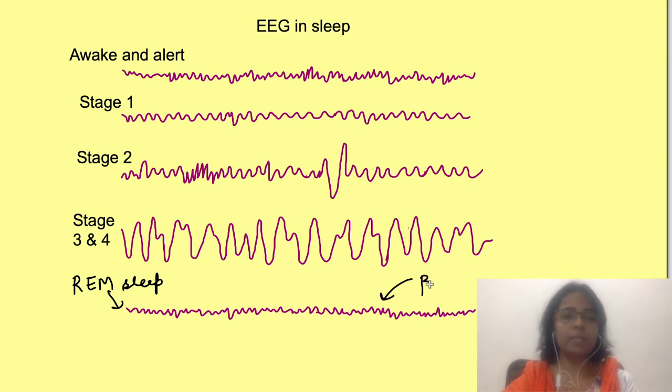In REM sleep we see beta wave-like activity just like the one seen in awake and alert state. It appears paradoxical that even though we are sleeping, EEG brain activity resembles an awake state. So REM sleep is also known as paradoxical sleep.